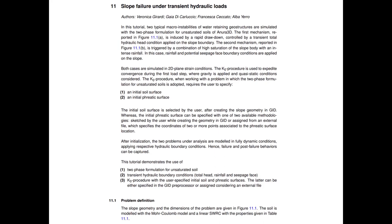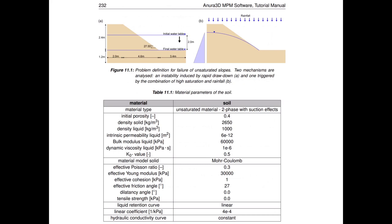This problem corresponds to the second example reported in a chapter dedicated to the simulation of a slope failure under transient hydraulic loads. As reported in the manual, this problem is modeled in 2D plane strain conditions. Here you can see the geometry of the problem, the dimension specifications, and a table with the material parameters considered. In particular, the soil is modeled using the two-phase formulation of MPM for unsaturated soils.